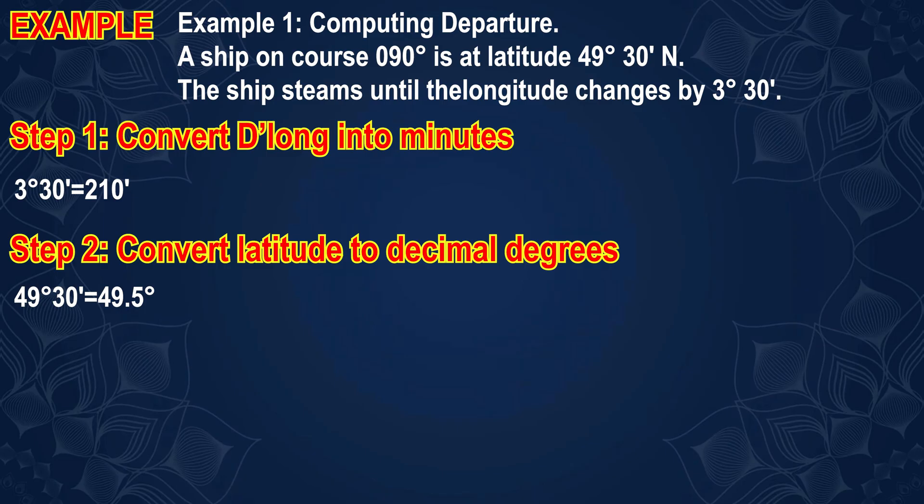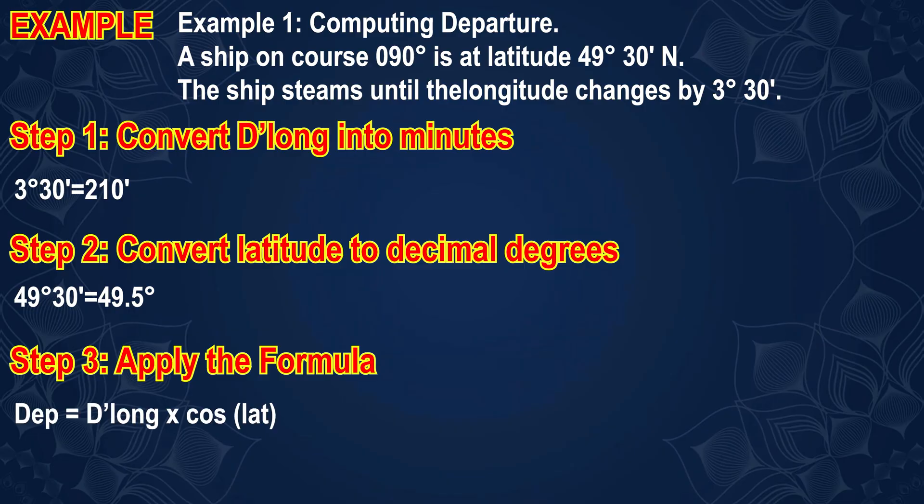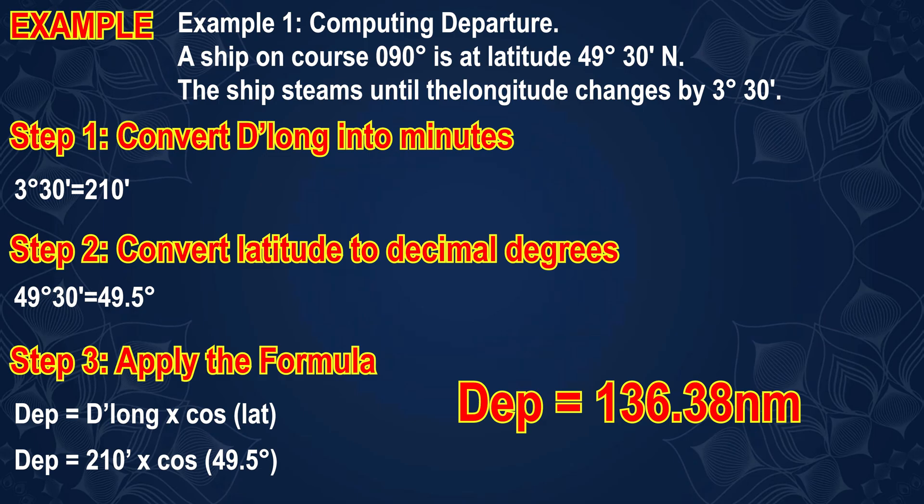Step 3: Apply the formula. Departure equals difference in longitude multiplied by the cosine of latitude. So, departure equals 210 multiplied by the cosine of 49.5 degrees. The result is 136.38 nautical miles.